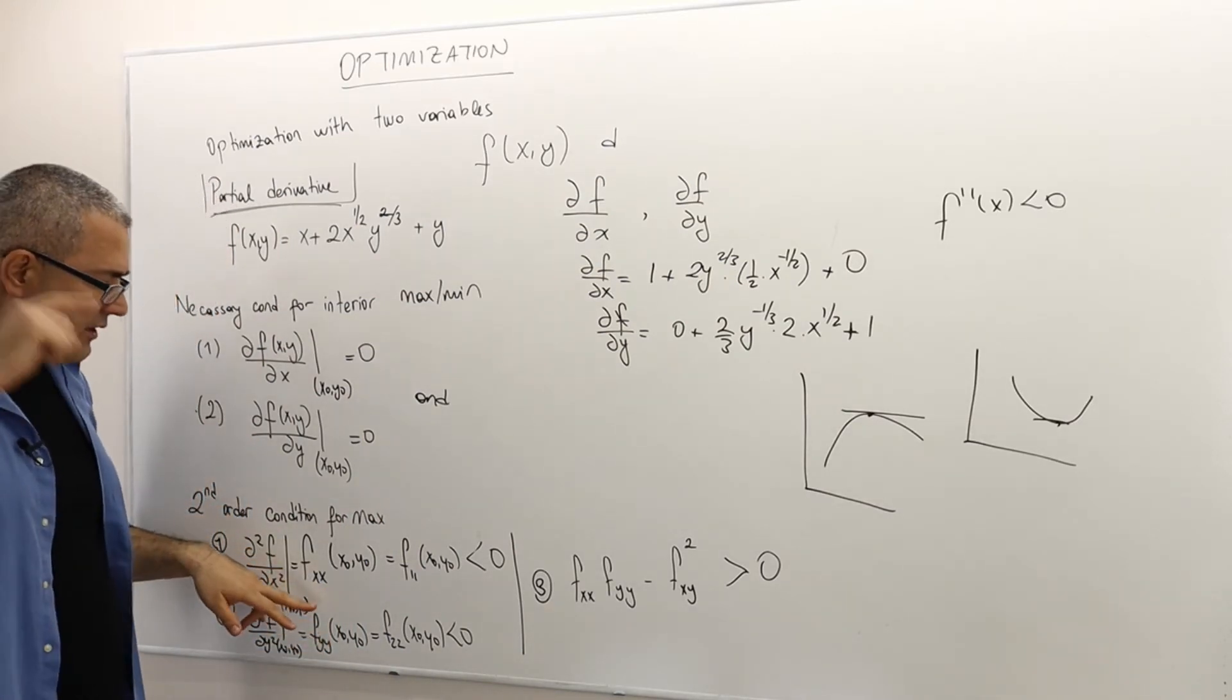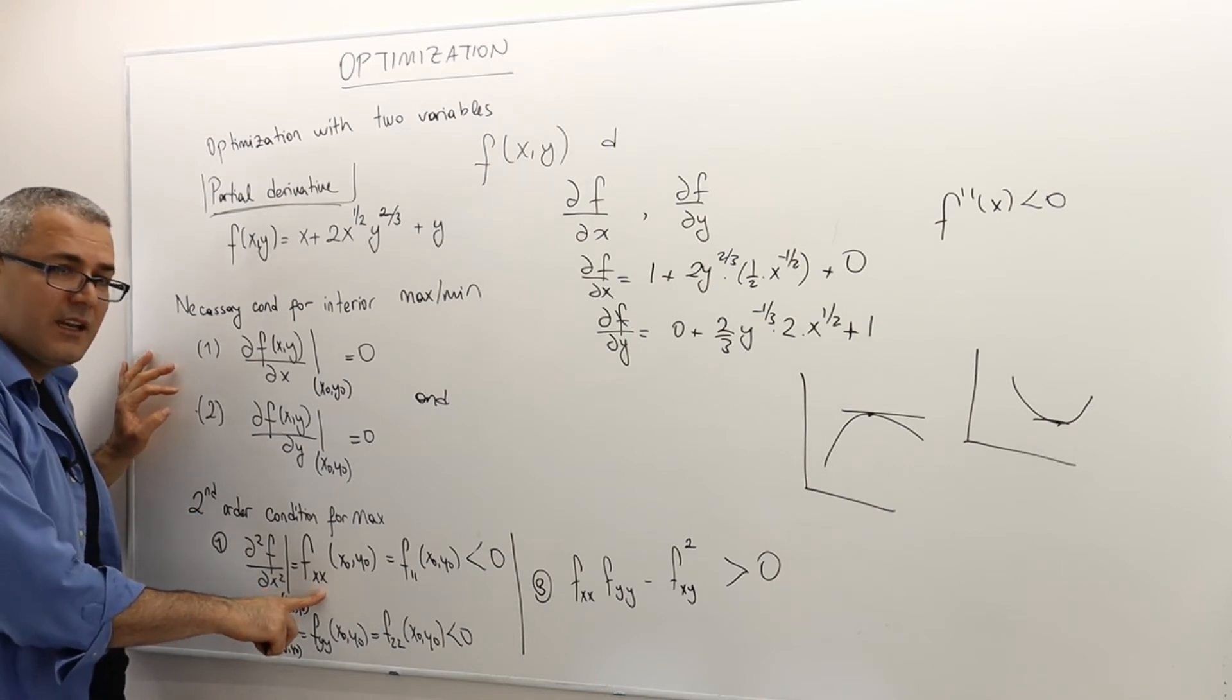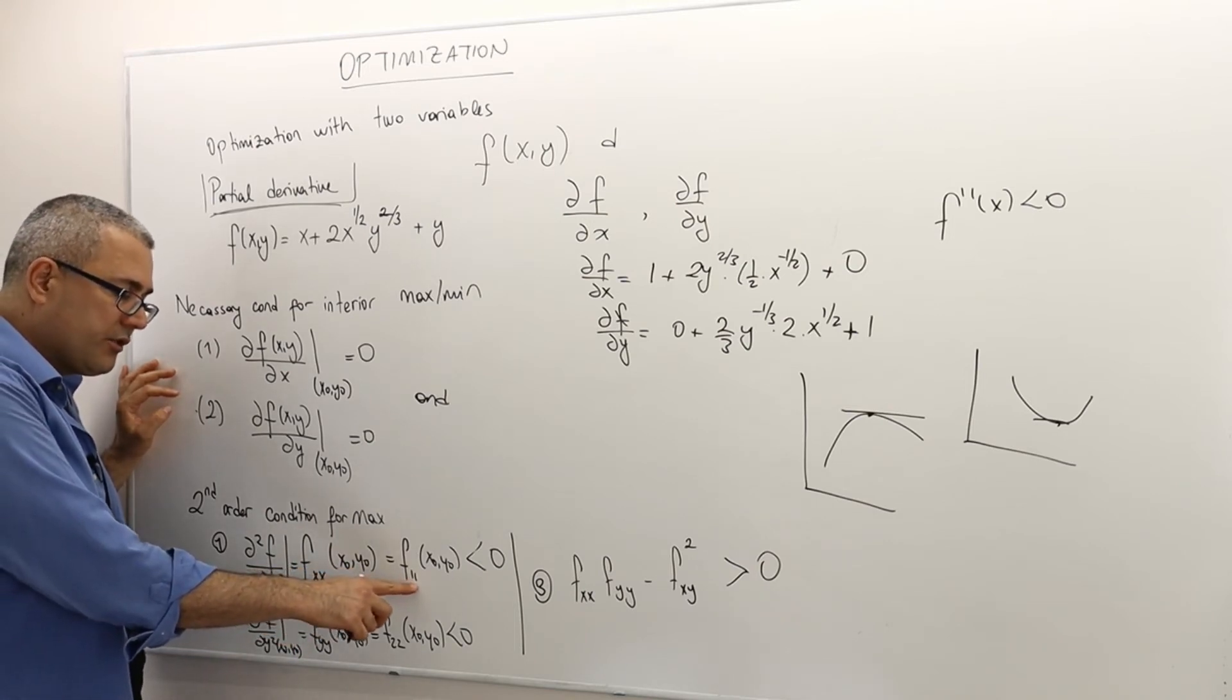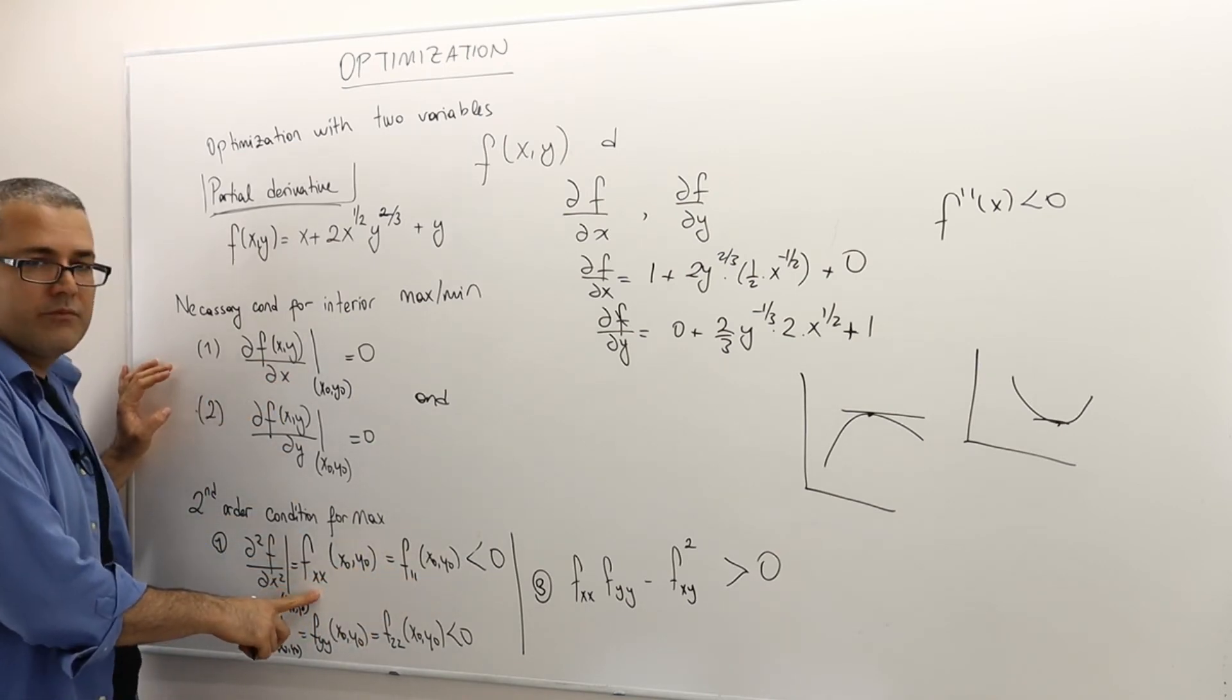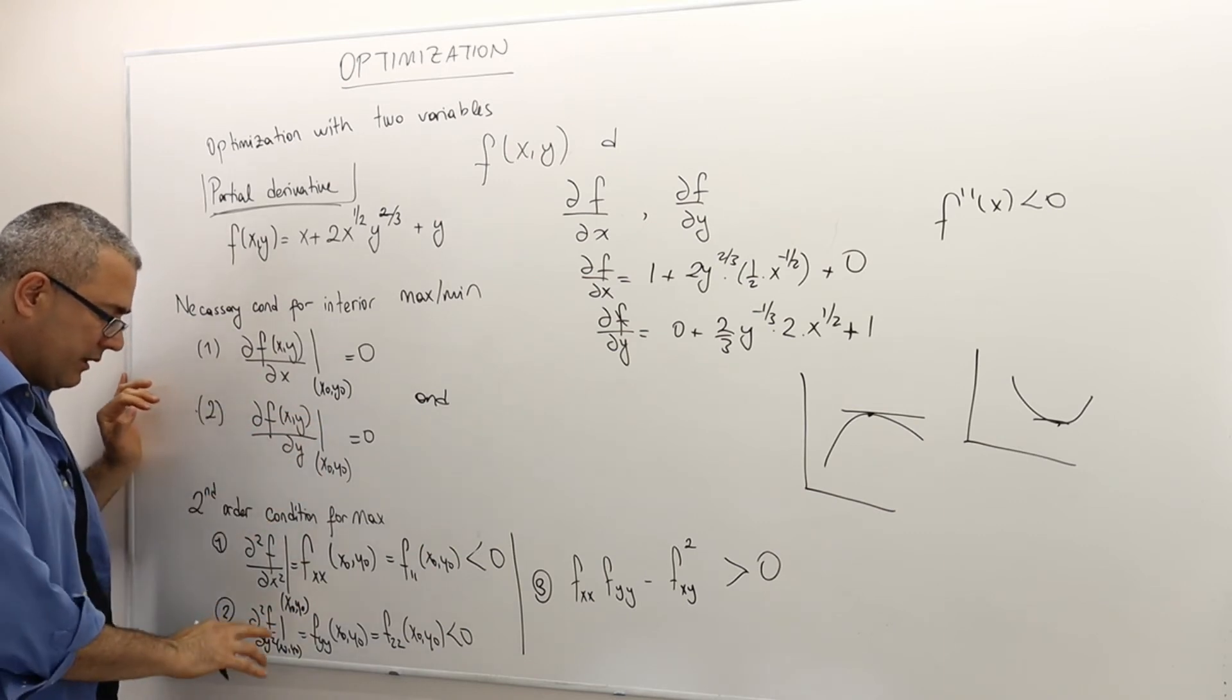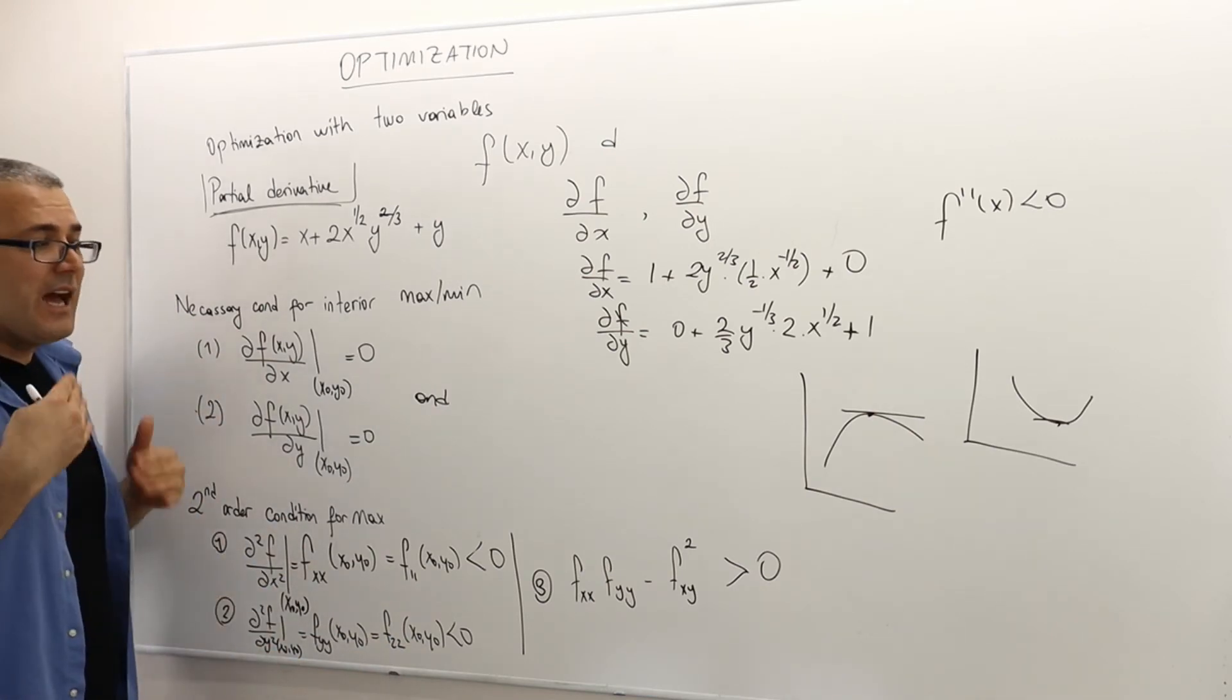This time, I'm looking at the second derivative with respect to x. So sometimes we denote it by f sub xx or f11, which means the first variable here is x, the second variable is y. So the partial derivative, but the second partial derivative with respect to the first parameter, which is x, or this way, or this way, as you wish. So they must be 0, I'm sorry, negative. And similarly, when you take the partial derivative with respect to y, it should also be negative. So both of those must hold, but that's not enough.